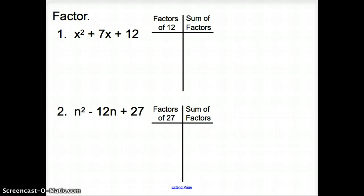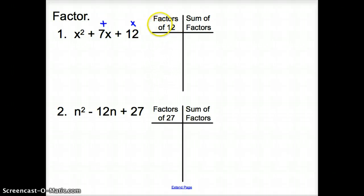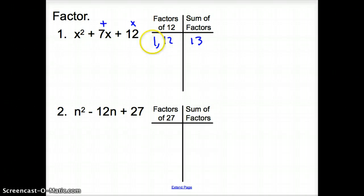So let's try number 1. We want to multiply to 12 and add up to 7. Let's first start with factors of 12 — always start with your factors. Start with the simplest: 1 times 12 multiplies to 12, but the sum is 13, so that's not 7. Again, we're multiplying up to 12 and adding up to 7. What's your next factor of 12? 2 and 6 — you add those together to get 8. That's not 7.